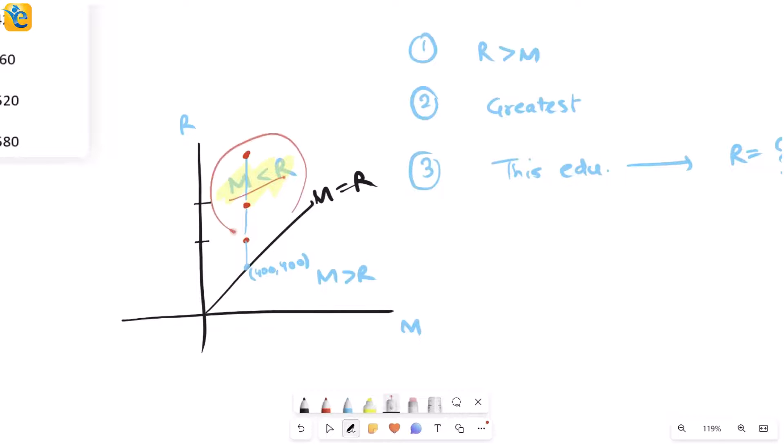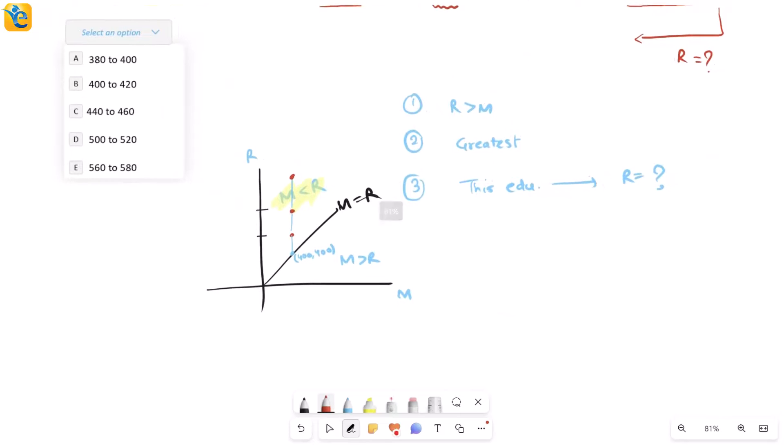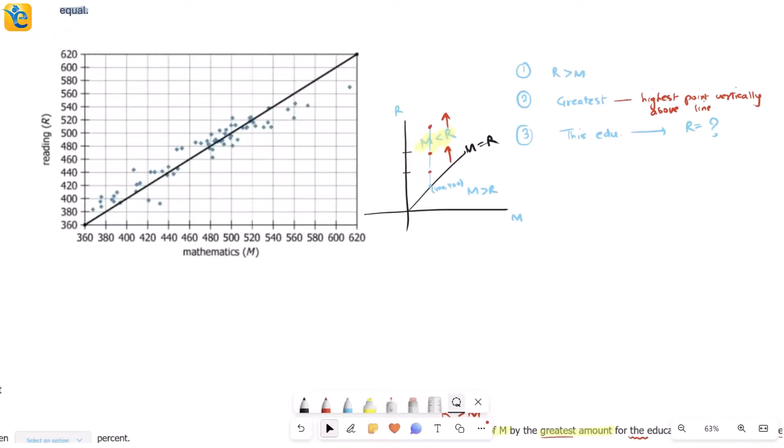So as I am going farther away from the line vertically above, that is how this difference between R and M is increasing. Yes, R is exceeding M in all of these places. Now that I want to know about the greatest difference that's going to be there, I know that I am looking for the highest point vertically above this line. So I am really seeing it vertically like this. So vertically above the line, we will identify this point. This point, once we identify, it will be the education system that we are interested in. Then we will simply go and read R. Let's bring that. Perfect.